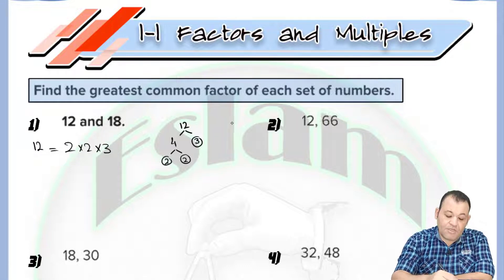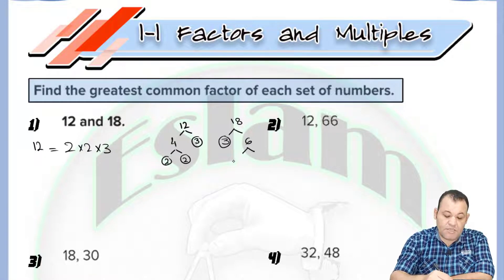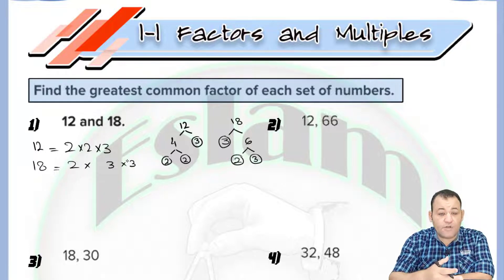Now the same for 18. 18 equals 3 multiplied by 6. Since 3 is a prime number and 6 equals 2 times 3, the factors of 18 would be 2 times 3 times 3. Don't write two different numbers under each other.